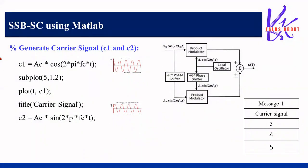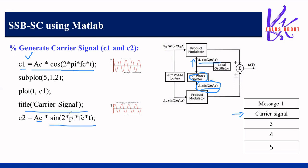Next, we generate the carrier signals. The first carrier c1 = Ac·cos(2π·fc·t) is plotted in the second subplot position. The second carrier c2 = Ac·sin(2π·fc·t) has a 90-degree phase shift and is fed to the second product modulator.